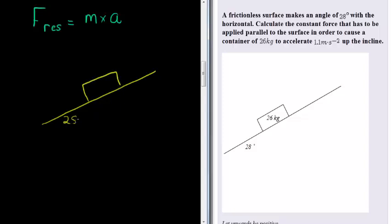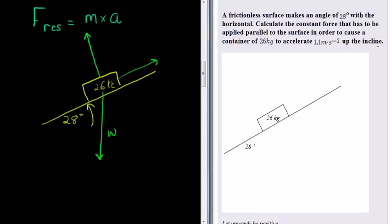We have our slanted surface and our 26 kilograms right here. Let's look at all the forces acting on this object. We have weight, the normal force, and then we have an applied force — in this case up the incline. When we add all three of these, we find a resultant force that is up the incline. In order to calculate the applied force, we are going to have to calculate the other three.